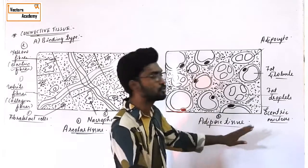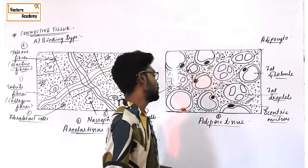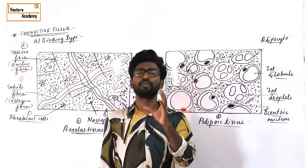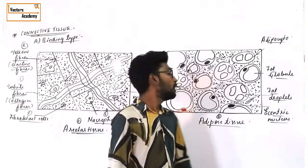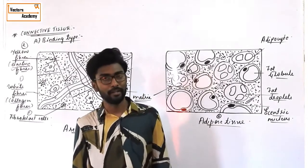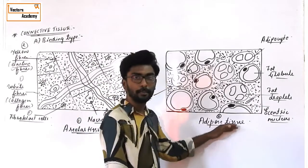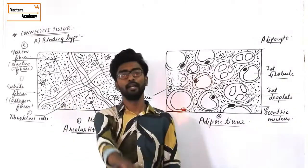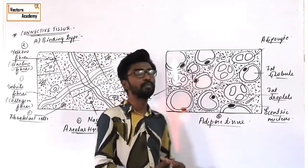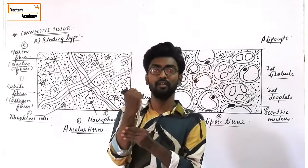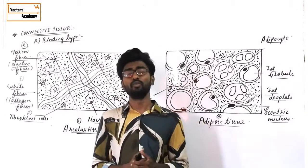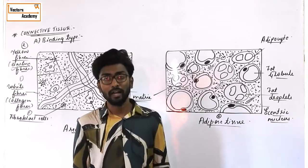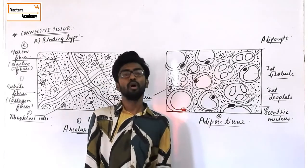The second type of binding tissue is adipose tissue. Adipose tissue is a fat-storing tissue — its basic function is to store fat. Adipose tissue is a modified areolar connective tissue. Its location: adipose tissue is present below the skin, around the heart, around the kidney, around the eye socket, etc.